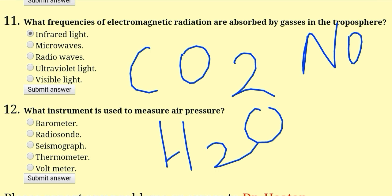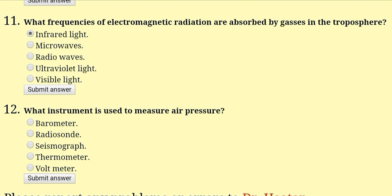What instrument is used to measure air pressure? A barometer is used to measure the pressure of the atmosphere — air pressure is measured with the help of a barometer. With this, we have covered some important questions from the atmosphere. Thank you very much.